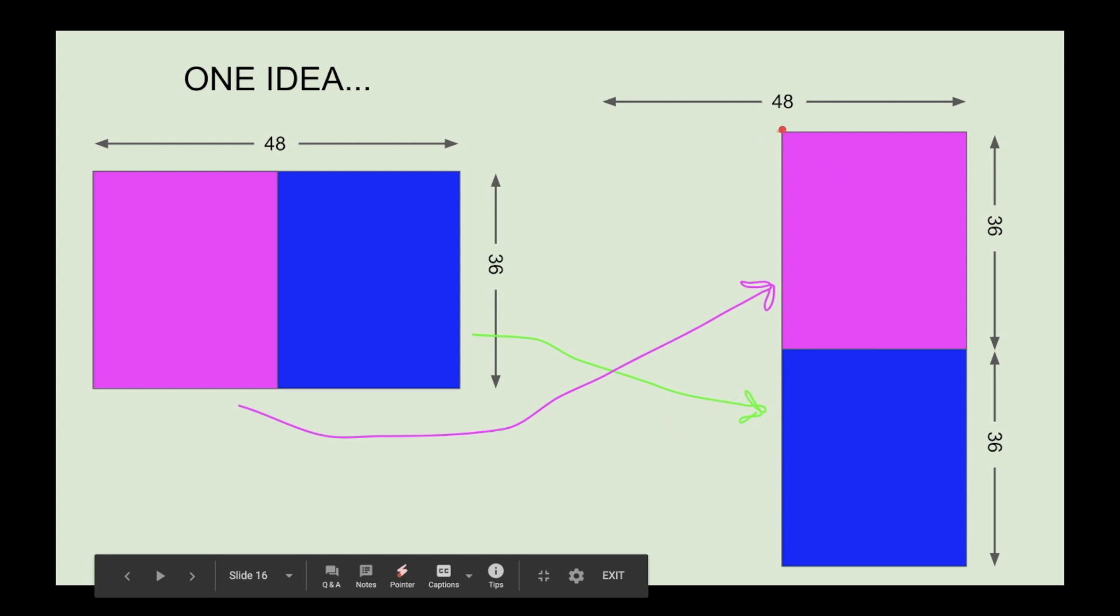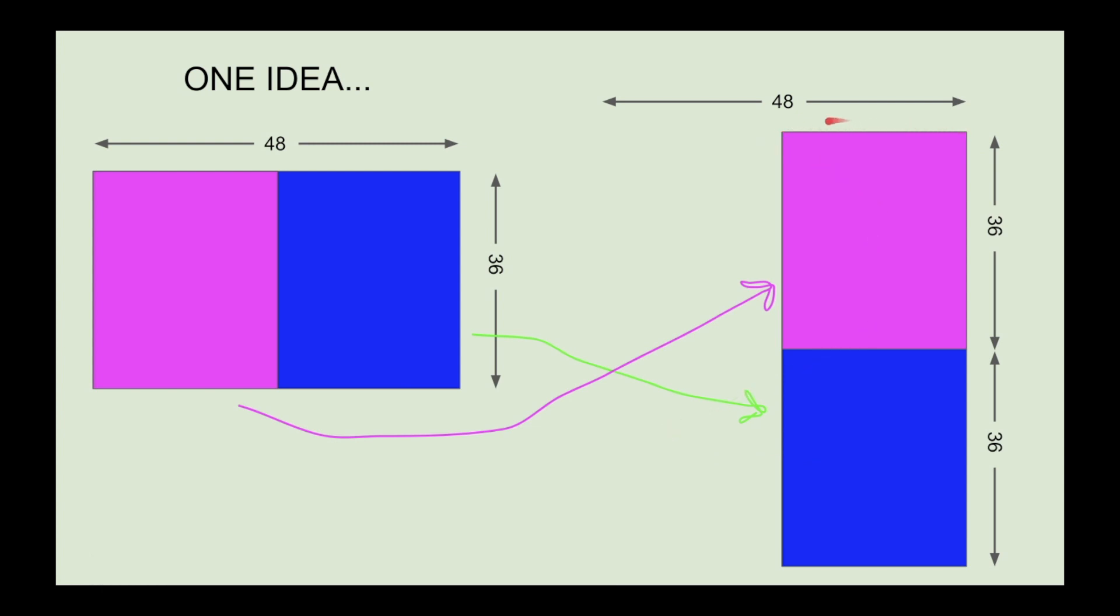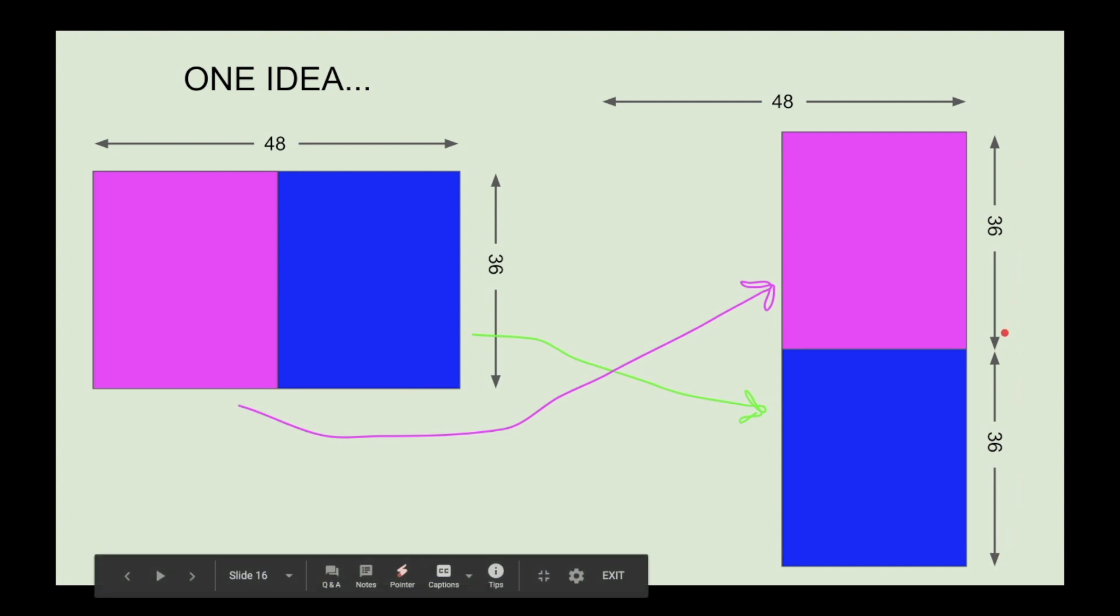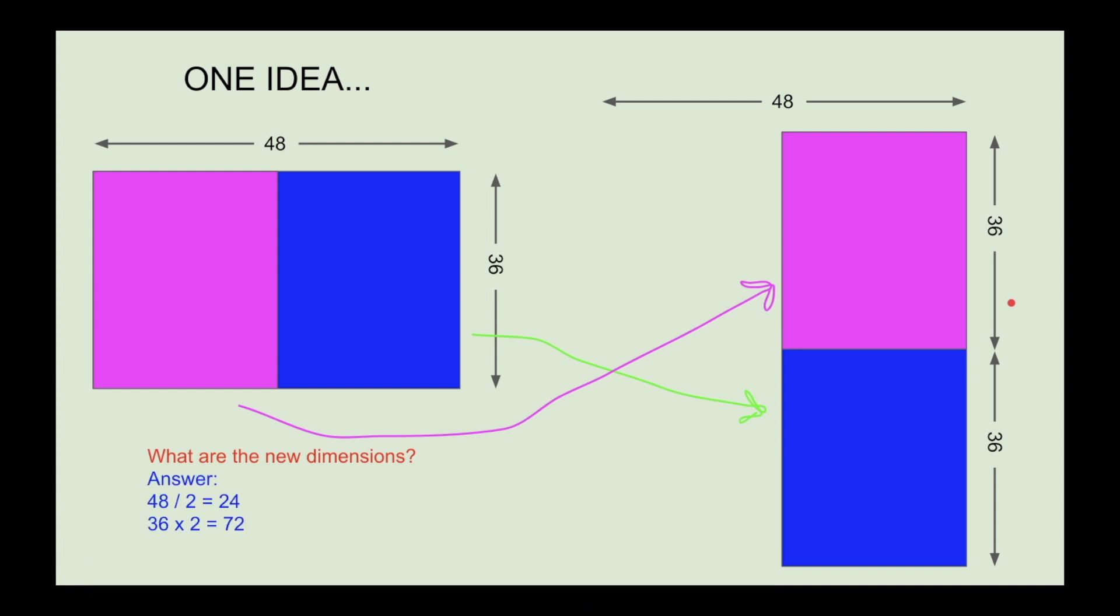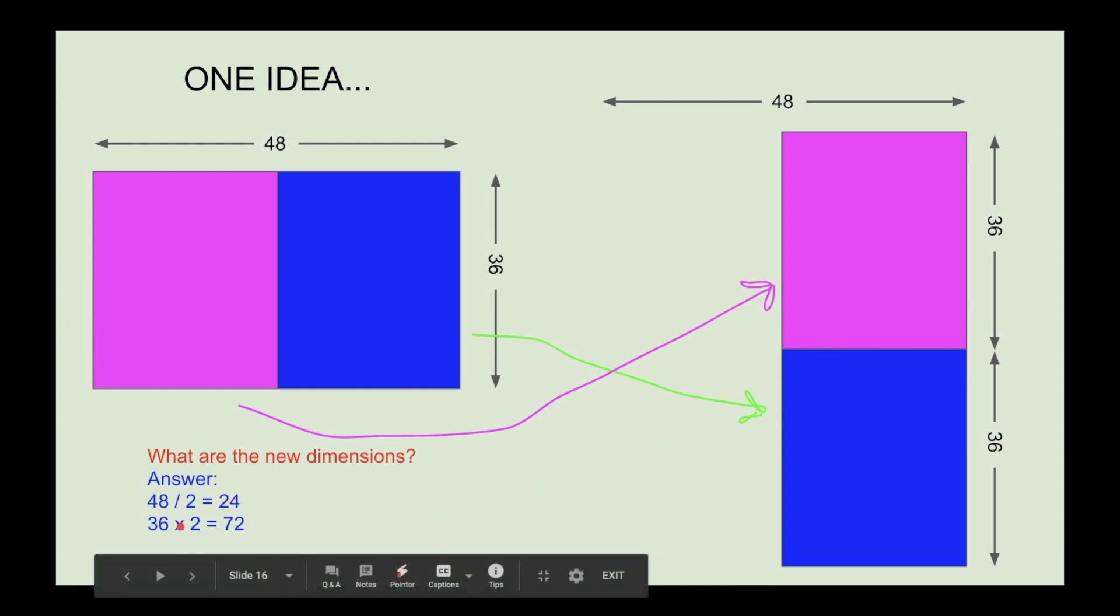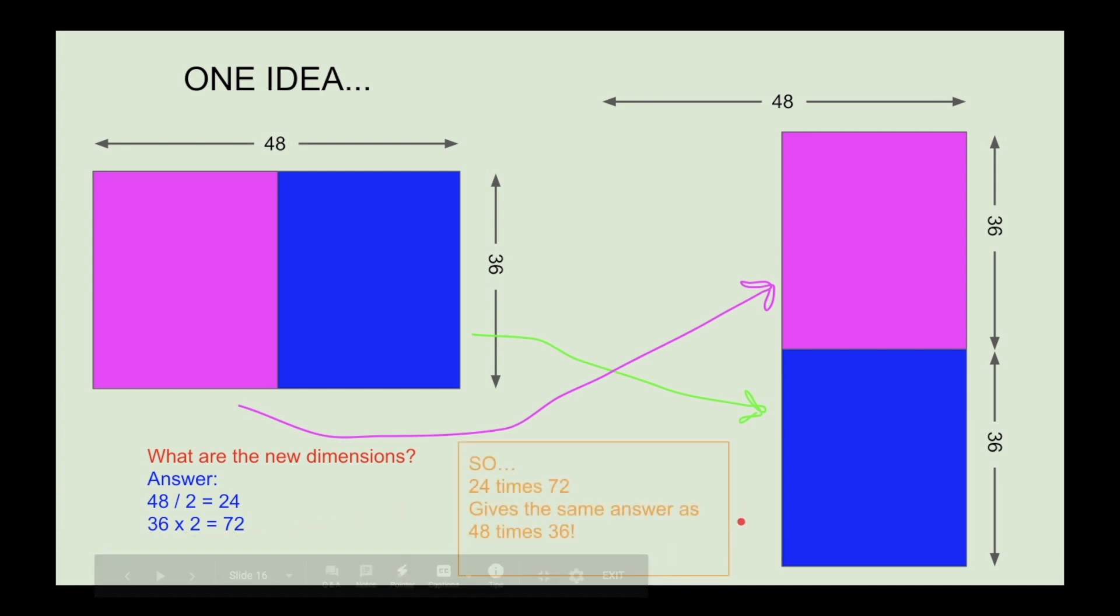So the width is now half as wide as it was before—half of 48 is 24. And the length is now double what it was before because we have two 36s together, which makes 72 in total. So the new dimensions: you divide 48 by 2 and you multiply 36 by 2, and it's 24 by 72.